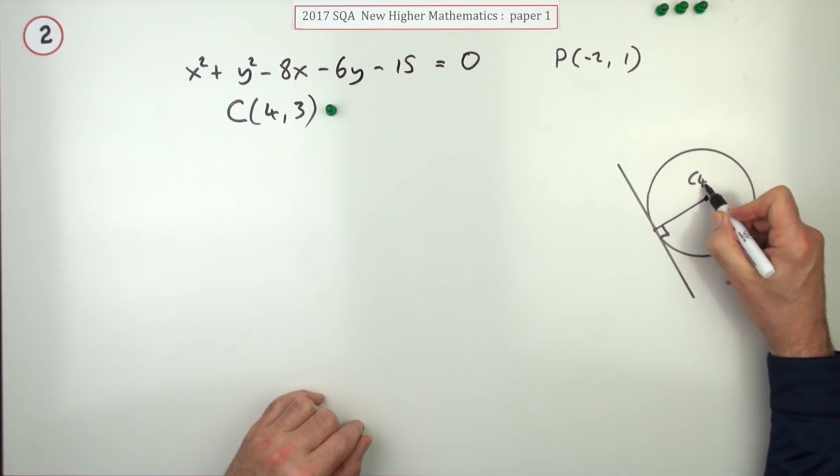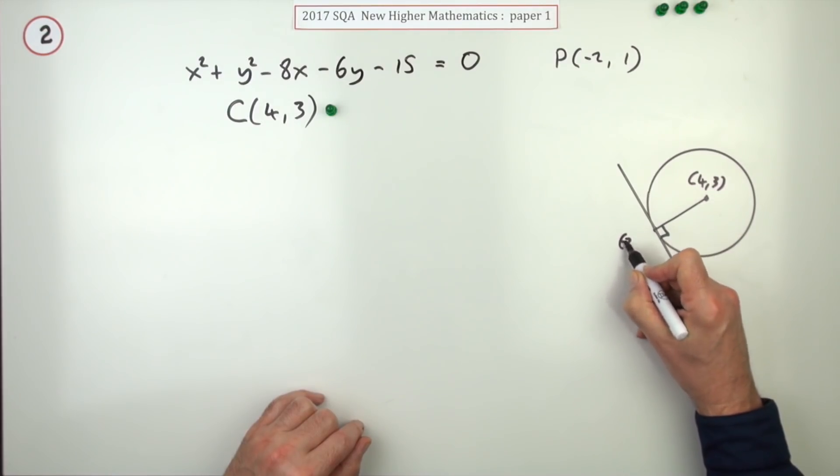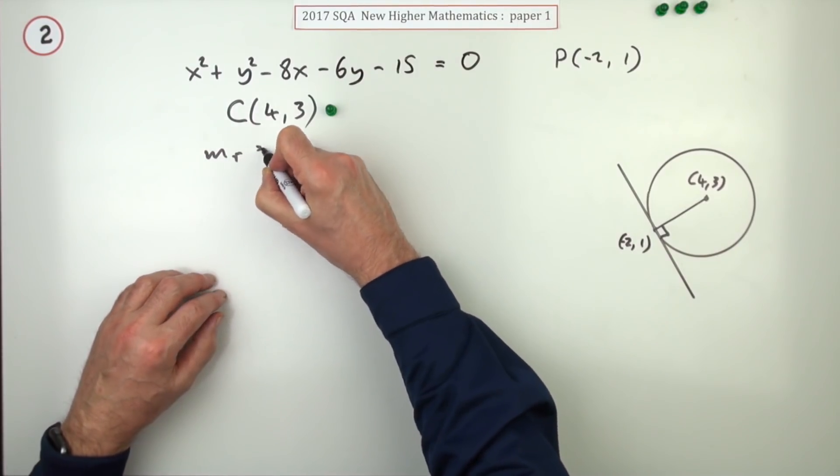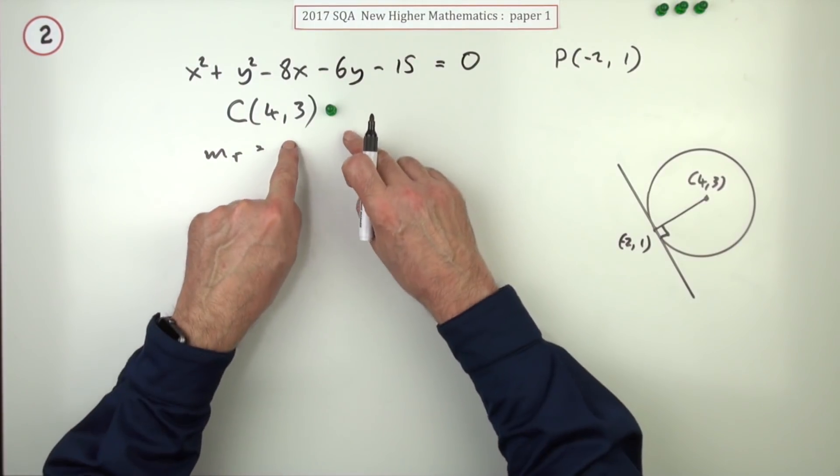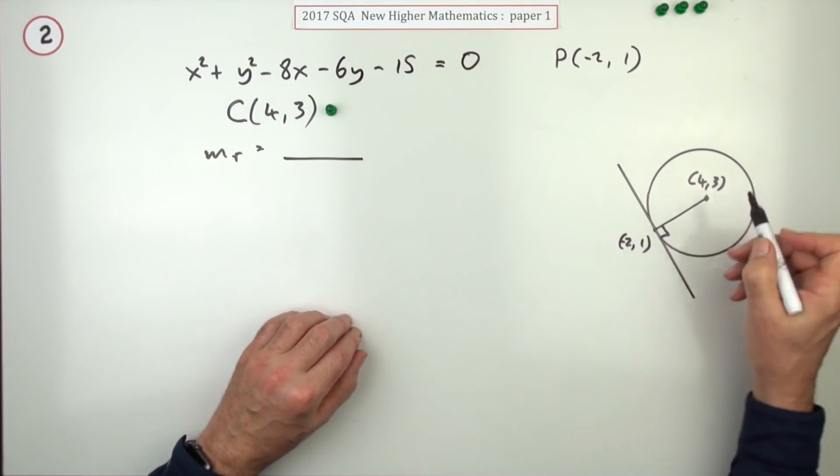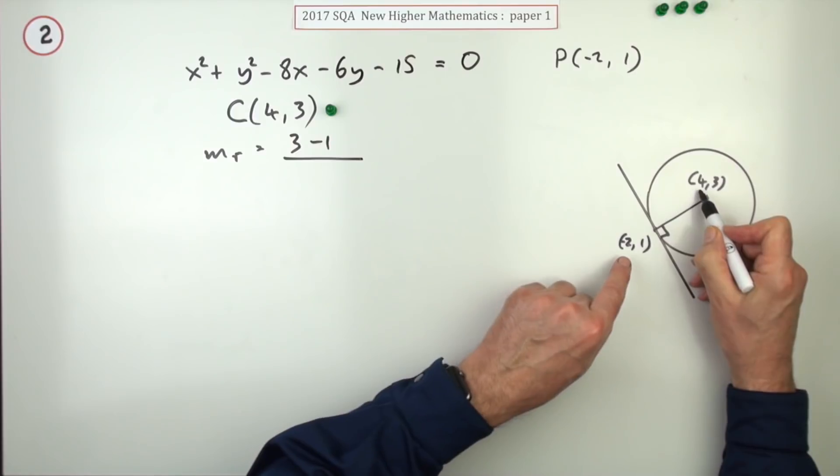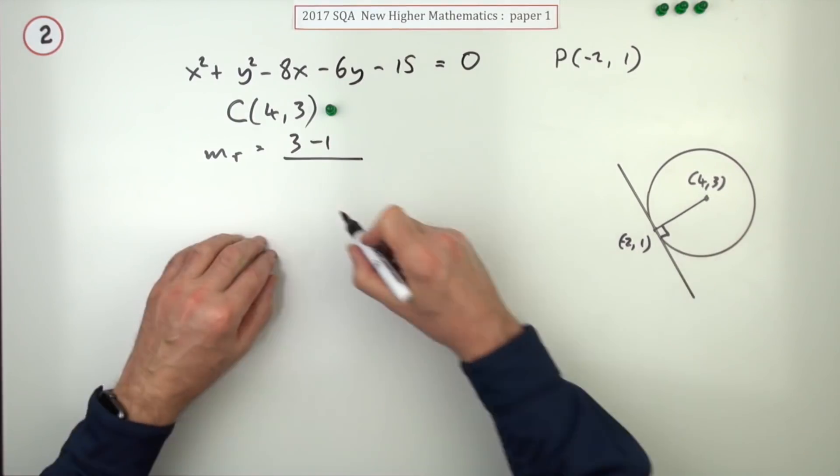The center of the circle's at C(4,3). The point's at P(-2,1). From that, you can get the gradient of the radius. So that'll be the difference in the y-coordinates, which I'll just state from here, 3 take away 1, over the difference in the x-coordinates, 4 take away negative 2.